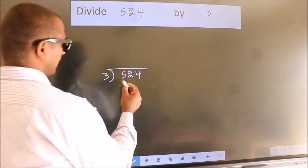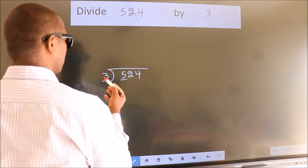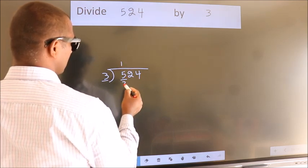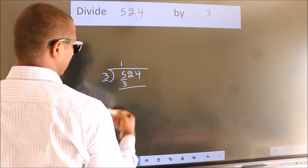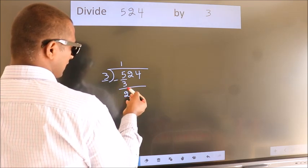Next, here we have 5, here 3. A number close to 5 in 3 table is 3 1s 3. Now, we should subtract. We get 2.